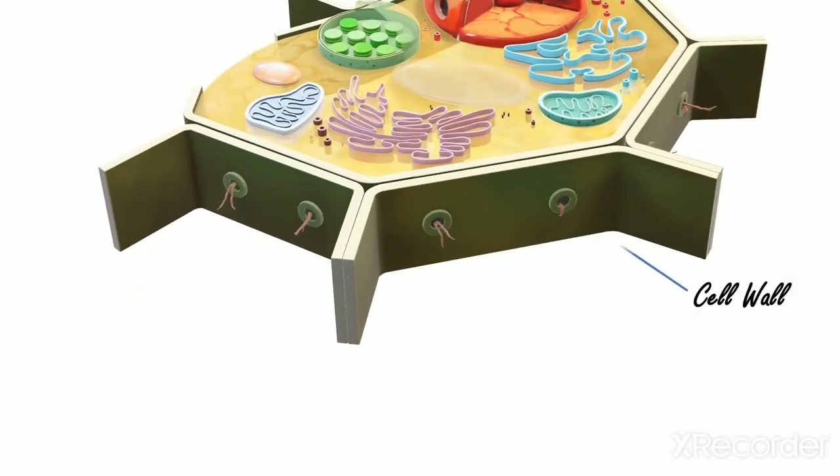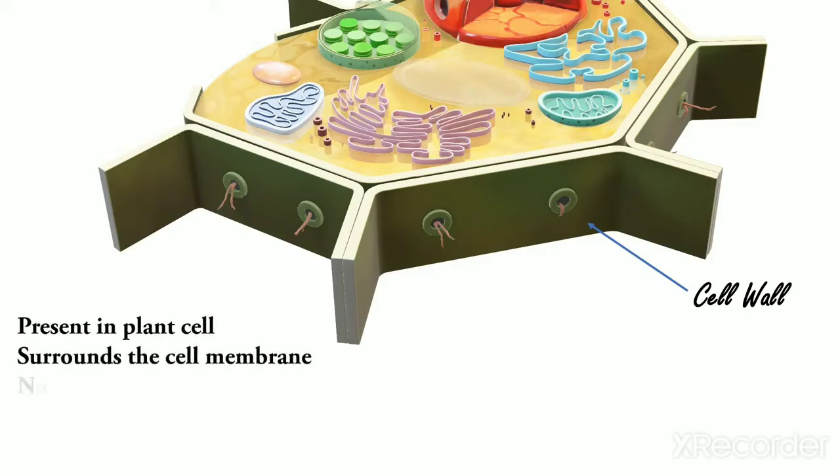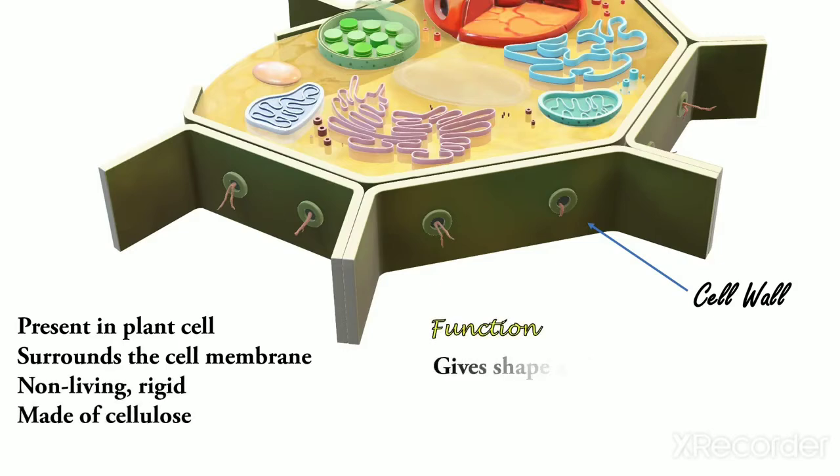Cell wall. In plant cells, an additional wall called cell wall is present which surrounds the cell membrane. It is a non-living layer made up of cellulose. Cell wall gives shape and rigidity to the cell and protects the protoplasm.